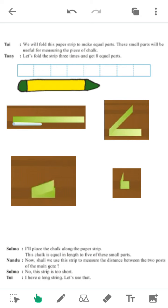So, this strip is longer than chalk strip. Now, we will fold this paper. So, this paper fold three times. First time, second time, and third time. I will place the chalk along the paper strip. This chalk is equal in length.